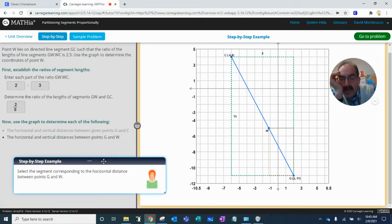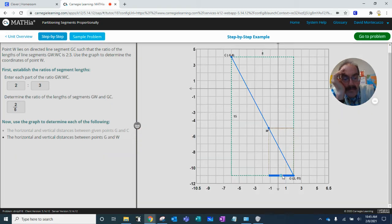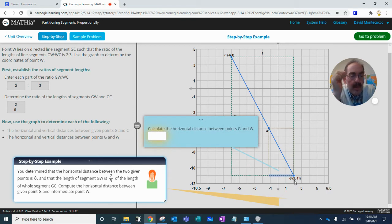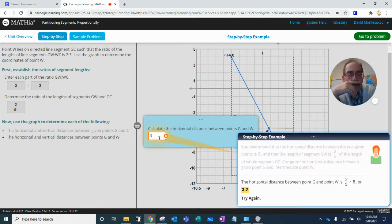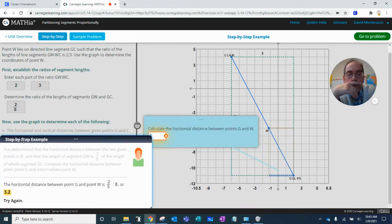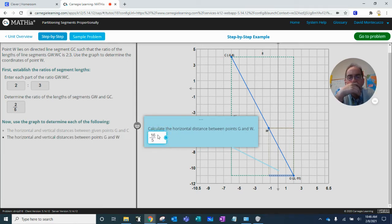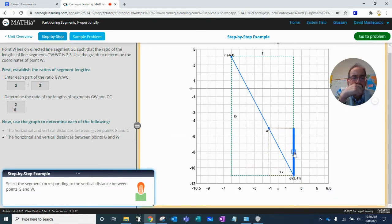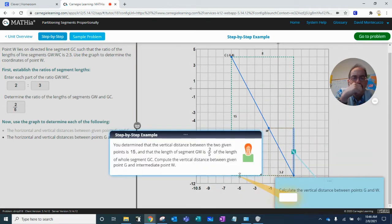Select the segment corresponding horizontal distance between G and W. Two-thirds, two-thirds, two-thirds. Three-fifths. Two-fifths. Okay so 16 over 5, two-fifths of the distance. Okay two-fifths of 15, two-fifths of 15, 30 over 5.